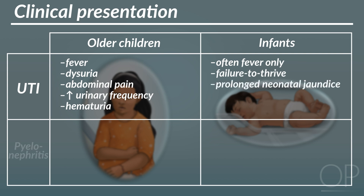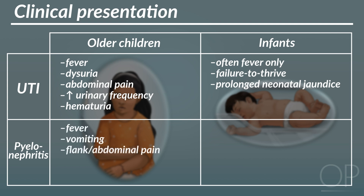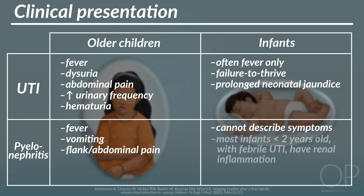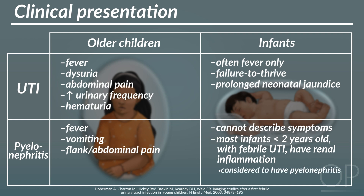Symptoms of pyelonephritis in older children include fever, vomiting, and flank or abdominal pain. Younger children cannot describe their symptoms, and evidence shows that most infants less than two years old with a febrile UTI have renal inflammation. Therefore, we consider infants less than 24 months with a febrile UTI to have pyelonephritis.